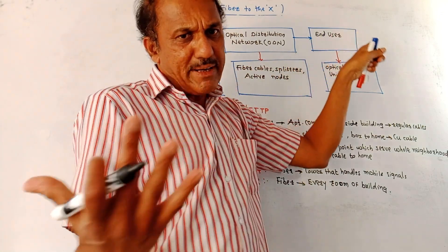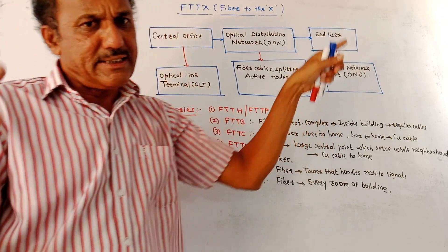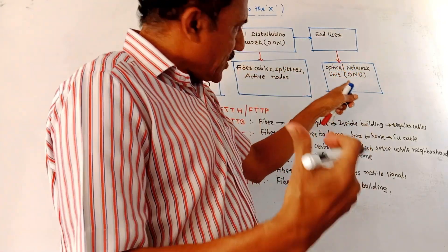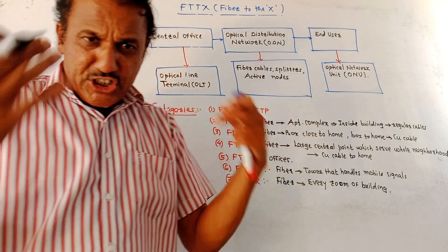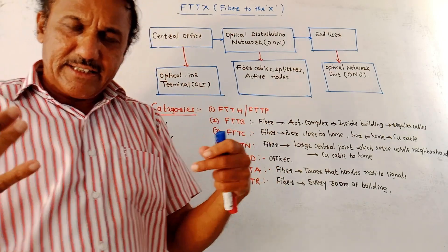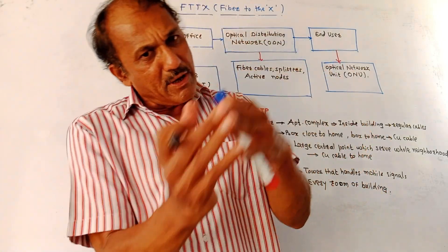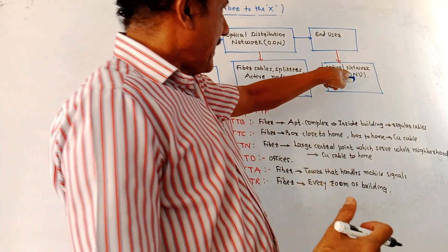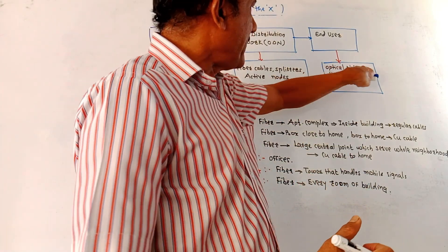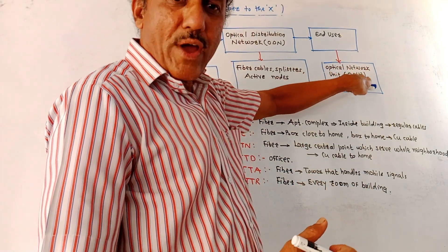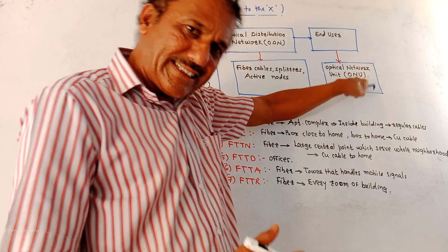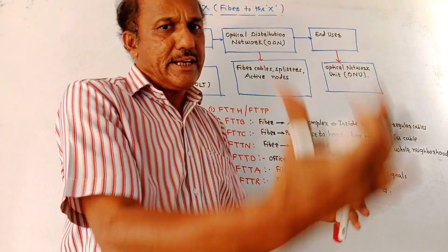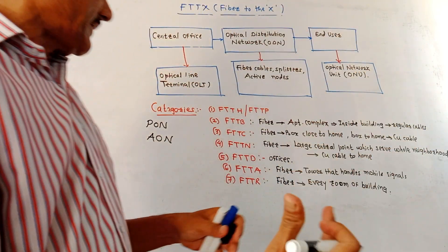At the end user side, the main task is to convert the incoming optical signal into an electrical signal. This is handled by the Optical Network Unit, or ONU, whose function is to convert the optical signal into an electrical signal.